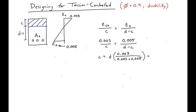This simplifies to C equals three-eighths D. Then we can plug this into our equilibrium equation. For equilibrium, AS_tension-controlled times Fy is equal to 0.85 f'c times b times β1 times C.